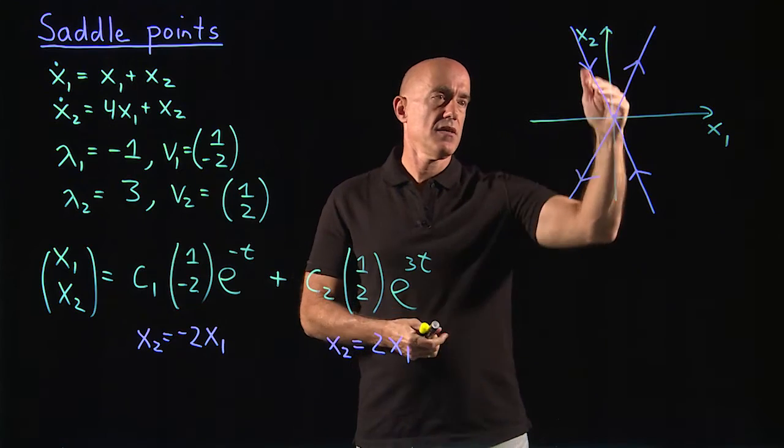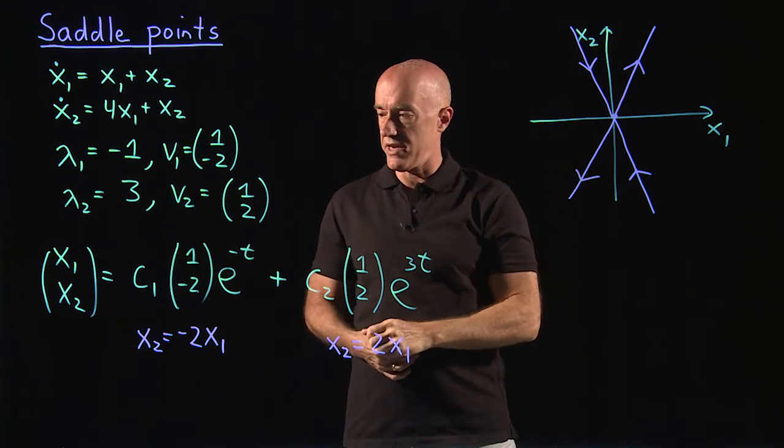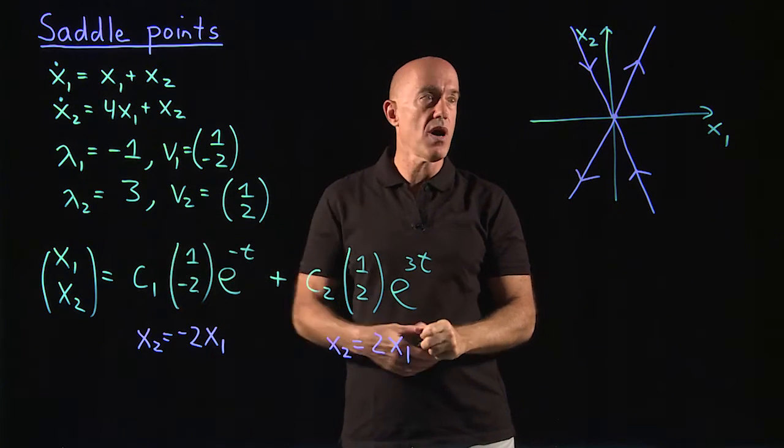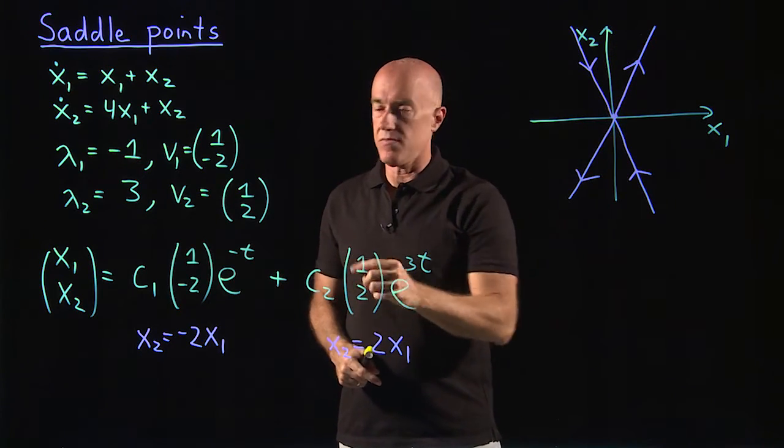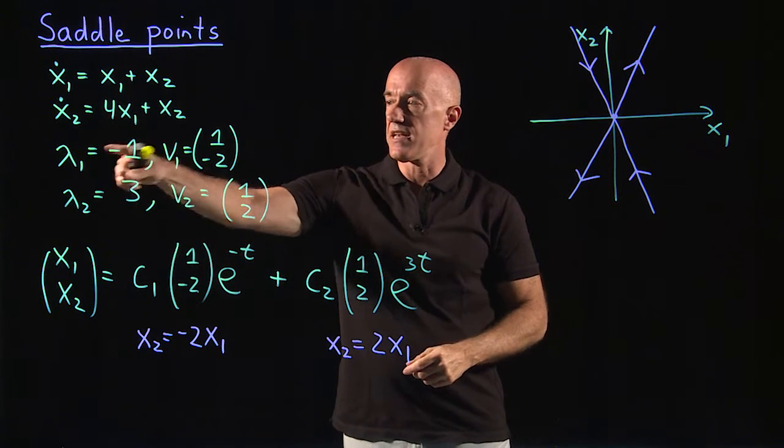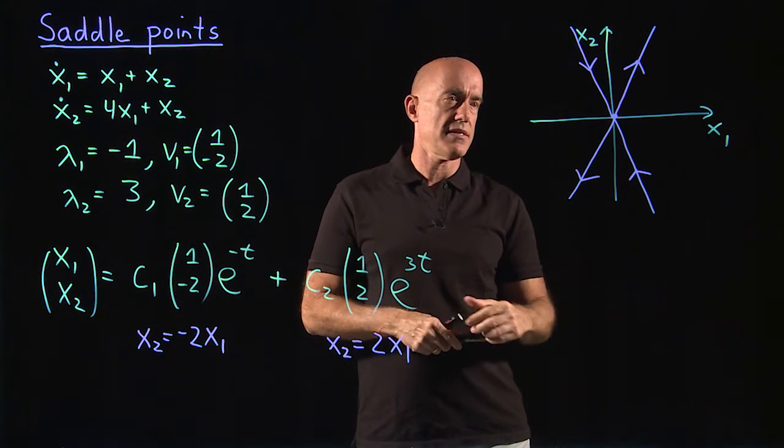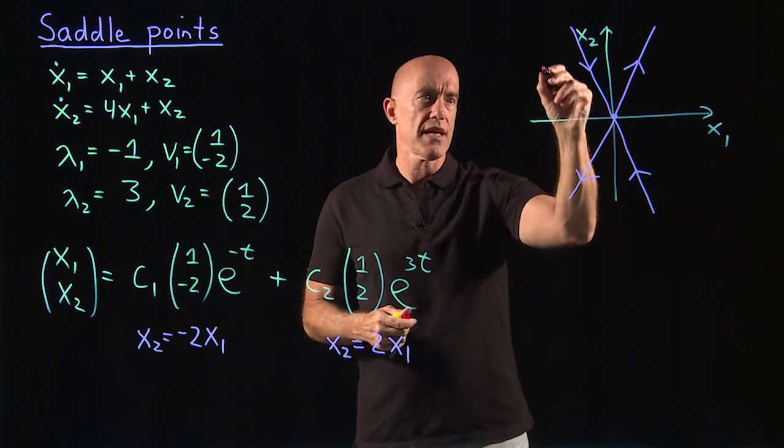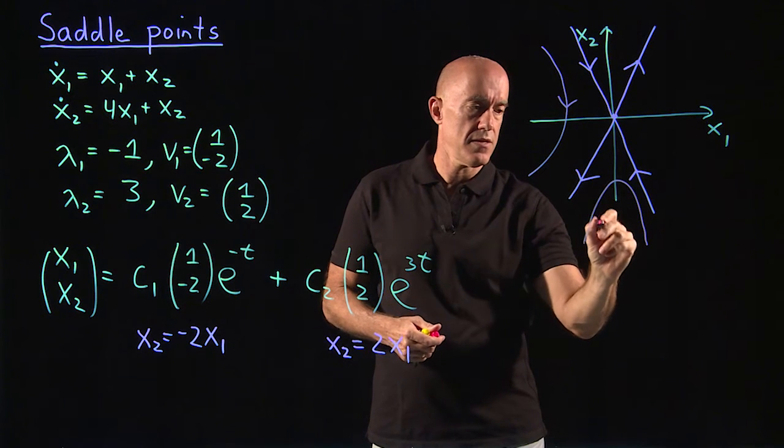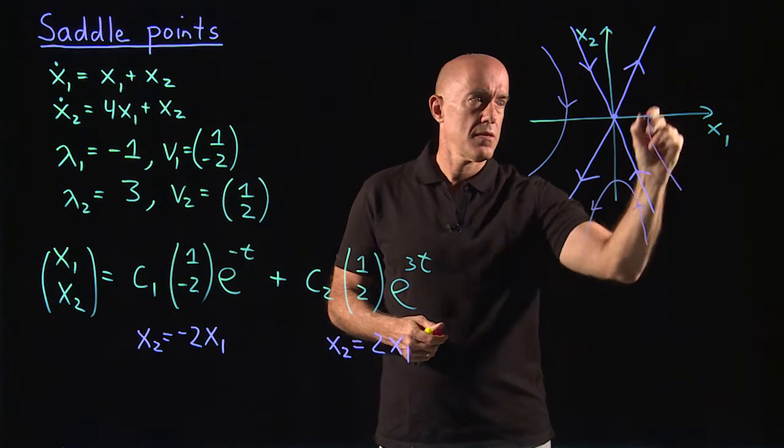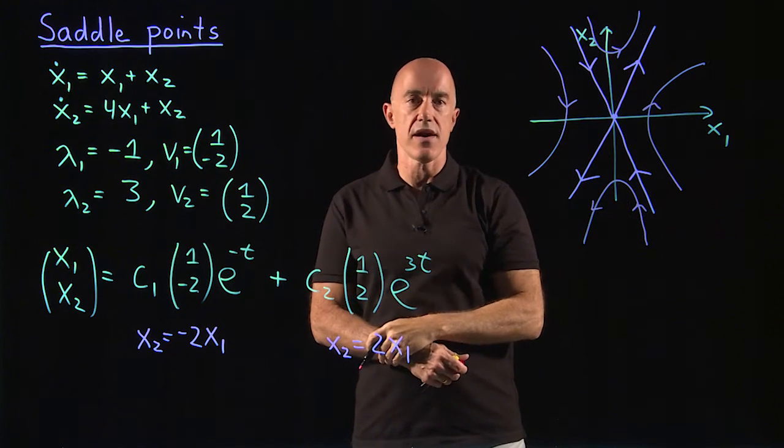What does this look like? So we're going into the fixed point along this direction, the direction associated with v1. And we're going out of the fixed point along this direction, the direction associated with v2, the positive eigenvalue. Negative eigenvalue in, positive eigenvalue out. And then, of course, you can sketch this diagram. A rough sketch would look something like this. You can see which way the arrows are going.